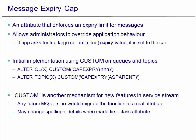The first new function in FixPack 4 is the ability to set a cap on the message expiry. This is a way for the administrator to override the expiry value set for any messages from applications. It's been implemented using the custom attribute on queues and topics. Custom is another way of being able to add function through the service stream without requiring an update to the command level. It gives us the opportunity to maybe change the implementation in future versions of MQ, but the capability itself will be carried forward.